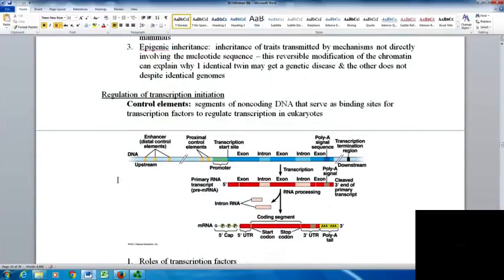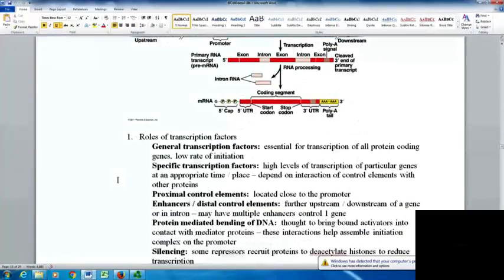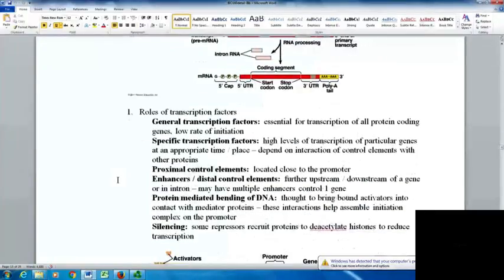Another way of regulating genes is transcription initiation. Control elements are segments of non-coding DNA that serve as binding sites for transcription factors and regulate transcription in eukaryotes. General transcription factors are essential for transcription of all protein-coding genes, while specific transcription factors produce high levels of transcription of particular genes at appropriate times and places.